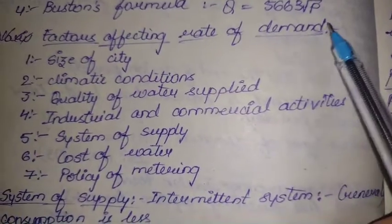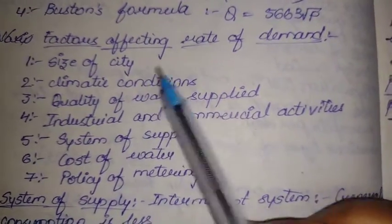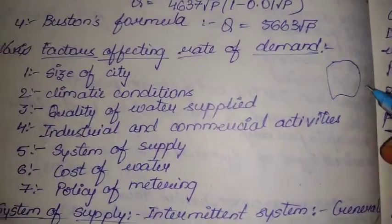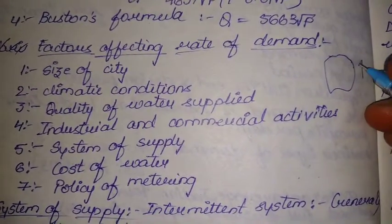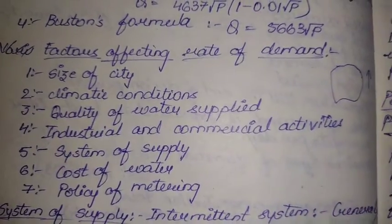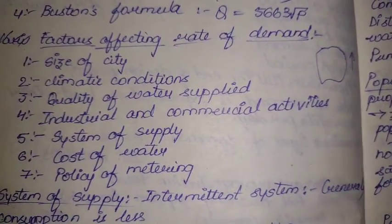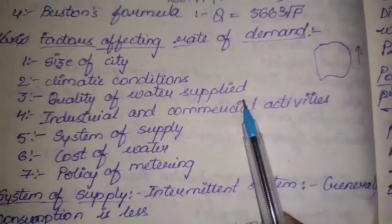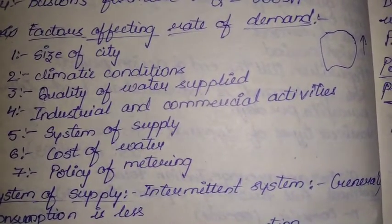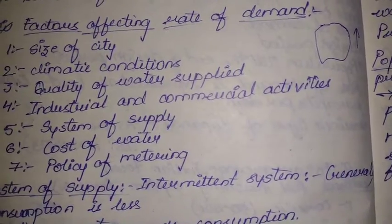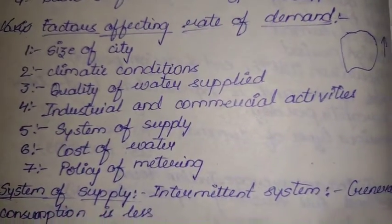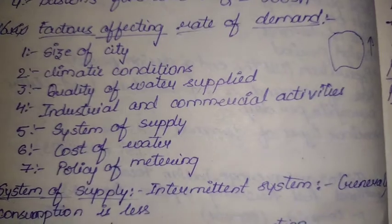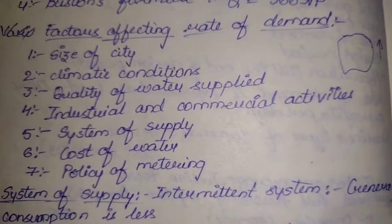The factors that affect the rate of demand are: size of the city — as the size increases, the rate of demand increases; climatic conditions — in hot weather conditions we require more water, in cold conditions we consume less; quality of water supplied — if quality is good people consume more; and industrial and commercial activities — if these are more, the rate of demand is definitely more.